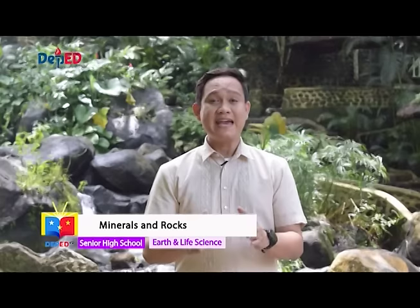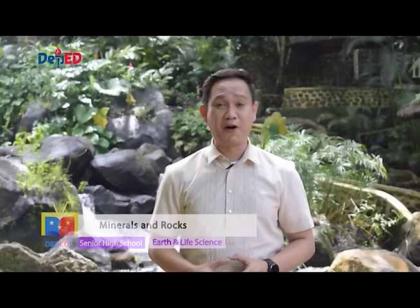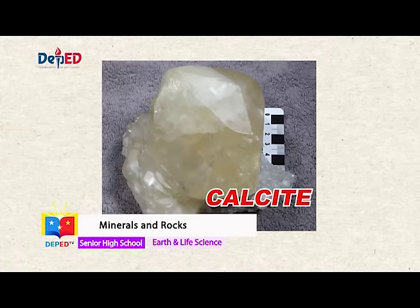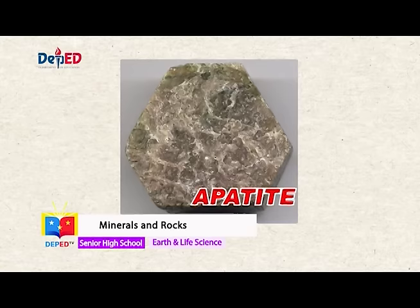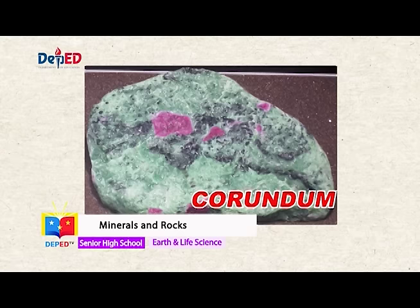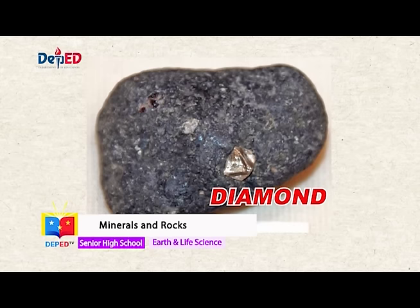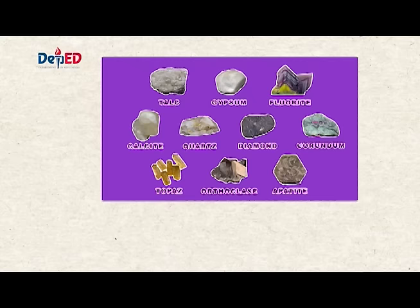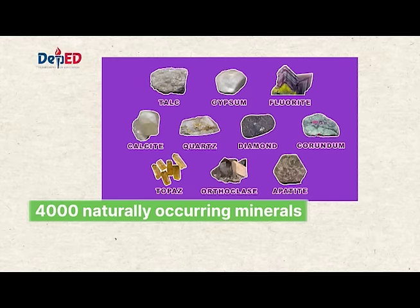It is amazing that our planet produces a dazzling variety of inorganic chemical compounds. They are called minerals, the building blocks of rocks. Examples are talc, gypsum, calcite, fluorite, apatite, orthoclase, quartz, topaz, corundum, and diamond. These are the 10 minerals of distinctly different hardness identified by Friedrich Mohs. These minerals are only a few of more than 4,000 naturally occurring minerals identified in our planet. Each year, about 60 to 80 minerals are discovered.